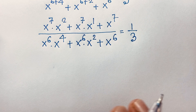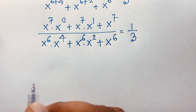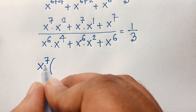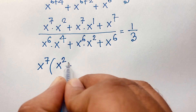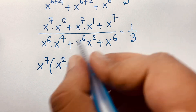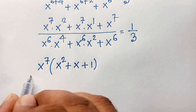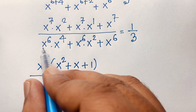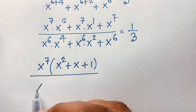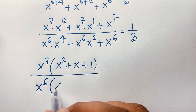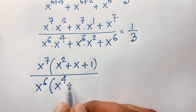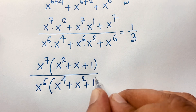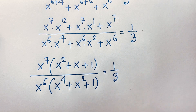Now x to the power 7 is common in the numerator, and x to the power 6 is common in the denominator. Taking x to the power 7 as common in the numerator gives x squared plus x plus 1. Taking x to the power 6 as common in the denominator gives x to the power 4 plus x squared plus 1. This equals 1 over 3.